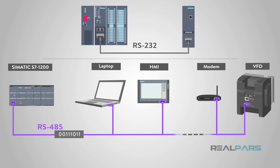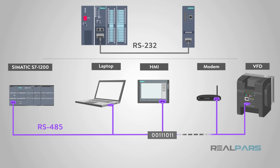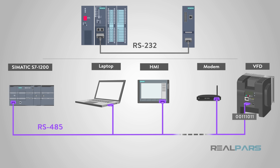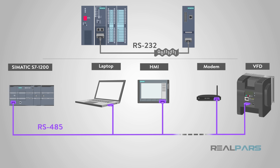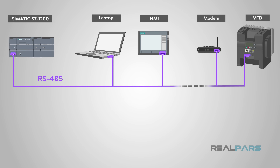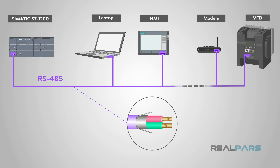Another plus for RS-485 is that it is less susceptible to noise issues. Electric noise can cause all kinds of problems for electronics. RS-232 referenced ground to decipher the data it was transmitting, which allowed electrical noise to cause interference. RS-485 avoids this issue, and also allows for shielding of the cables to prevent noise.